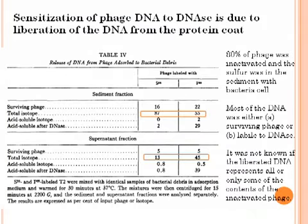This table shows that the sensitivity of phage DNA to DNase is due to liberation of the DNA from the protein coat. According to the table, 80% of phage was inactivated and the sulfur was in the sediment with bacterial cells. Most of the DNA was either in surviving phage or liable to DNase. One disadvantage of this experiment is that it was not known if the liberated DNA represents all or only some of the contents of the inactivated phage.